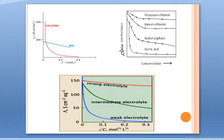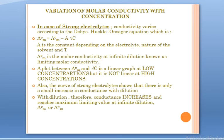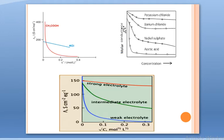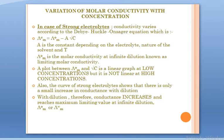With dilution, conductance increases and it reaches a maximum limiting value at infinite dilution. In the case of a strong electrolyte, there is a maximum value called λ°_m or λ∞_m — the maximum limiting value at infinite dilution — but only in the case of a strong electrolyte. This is very important to understand.